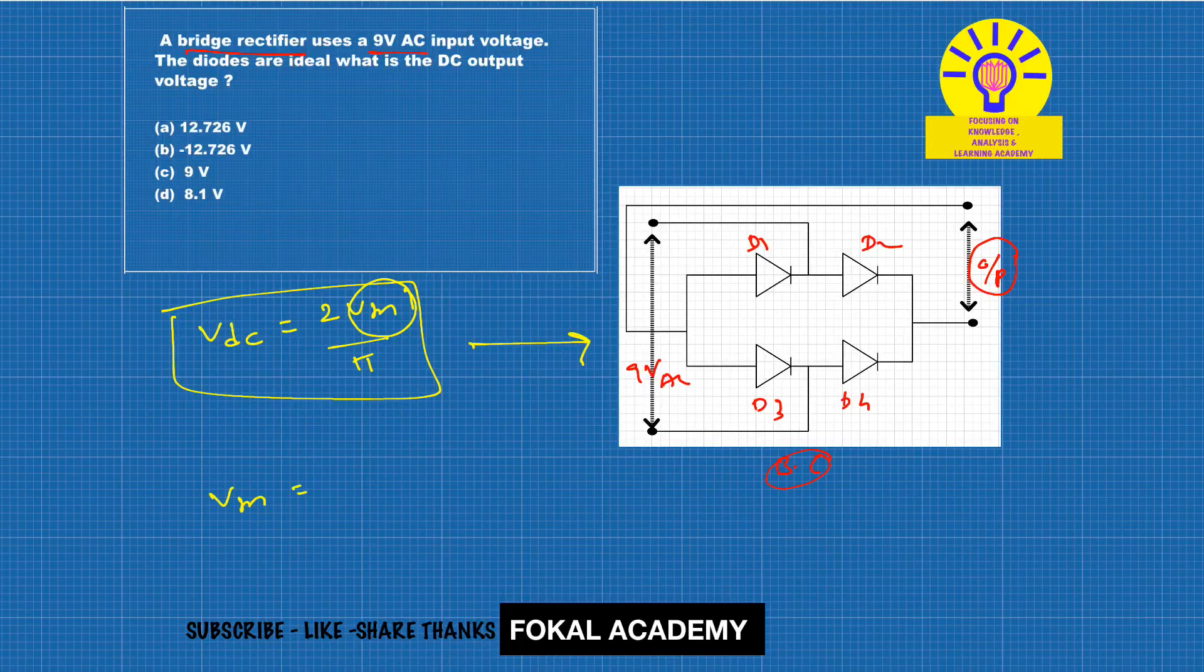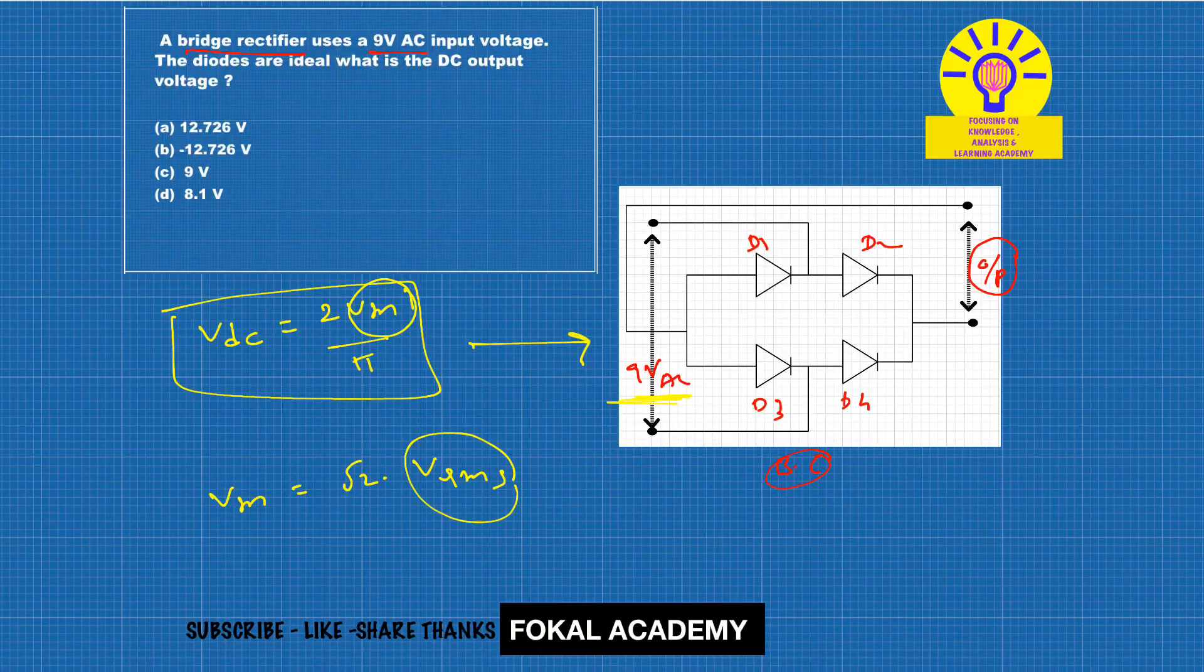We know that Vm is equal to maximum peak voltage, so that is equal to root 2 times the RMS voltage. Here RMS voltage is given as 9 volts AC. Now substitute here root 2 into 9.